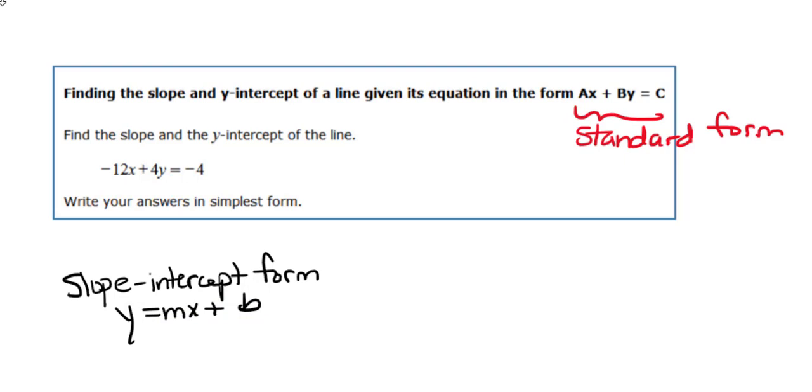So I'm going to write down my equation negative 12x plus 4y equals negative 4 and I'm going to begin by moving the x term from the left side of the equation over to the right side. How do we do this? Well, we can perform operations on an equation as long as we do the same operation to both sides.